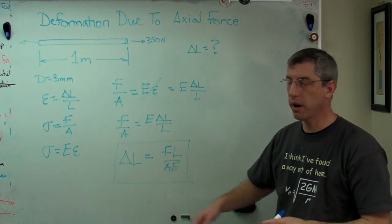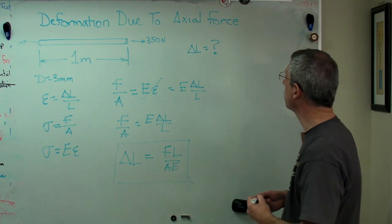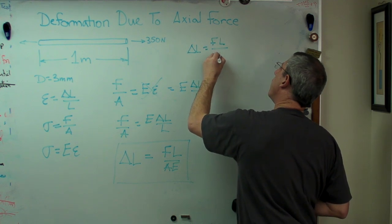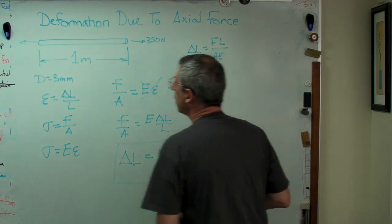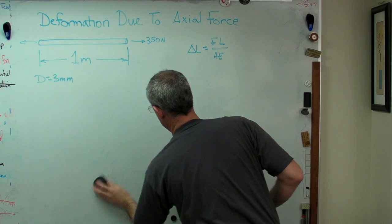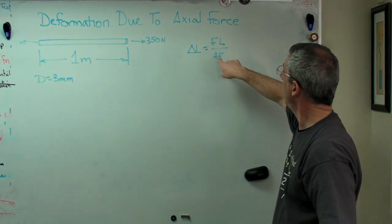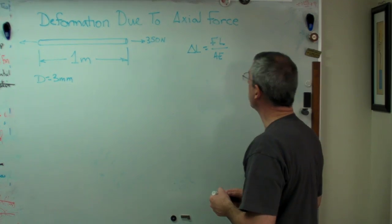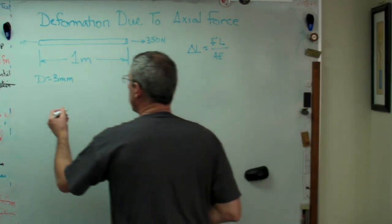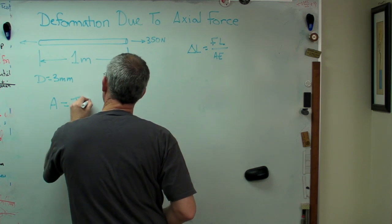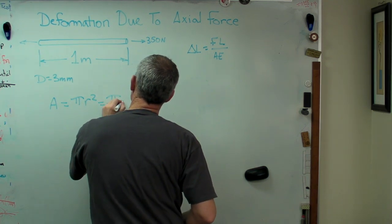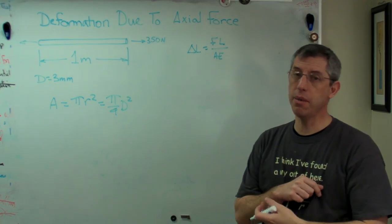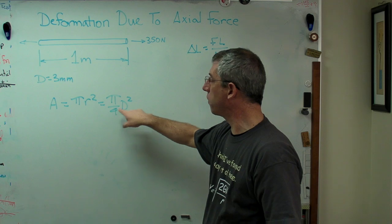That's the expression we need — δL = FL/AE — and it's certainly in your book somewhere. That's our governing expression. Now, we can know or figure out everything on the right side, and δL is what we're trying to find. The only thing we don't know right now is area, so let's work that out. Normally we teach area as π·r², which is correct, but when doing problems like this we're usually given diameters, so let's write area as π/4 times diameter squared.